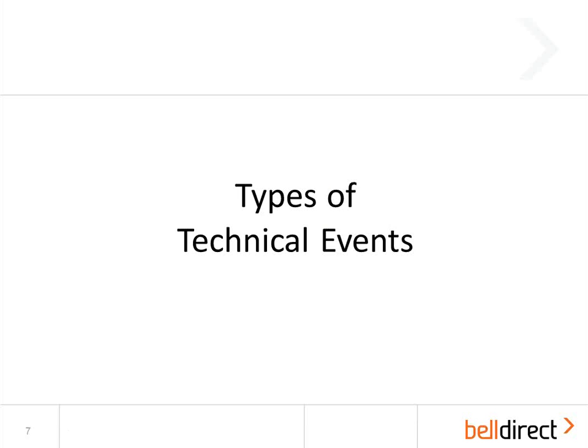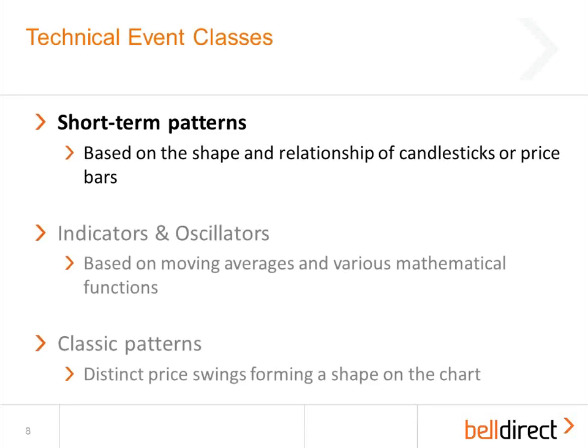Let's move on and talk about the kinds of technical events — the kinds of occurrences in technical analysis that a technical trader would want to know about. There are really three classes of events that are commonly used. There are what are called the short-term patterns to begin with. These are patterns that are based on the shape and relationship of candlesticks or price bars.